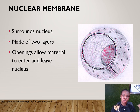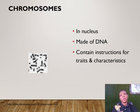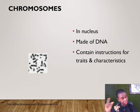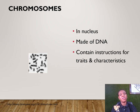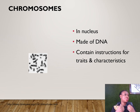The nuclear membrane surrounds the nucleus, is made up of two layers, and has openings that allow materials to enter and leave the nucleus. Within the nucleus are chromosomes, which are made of DNA. Chromosomes contain the instructions for your traits — the color of your hair, the color of your eyes — all the characteristics that any individual would demonstrate.